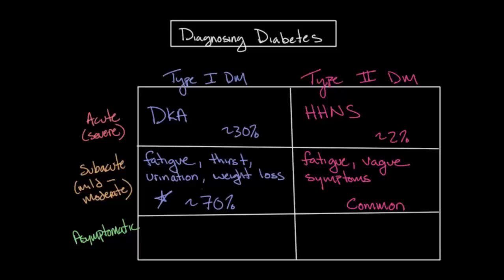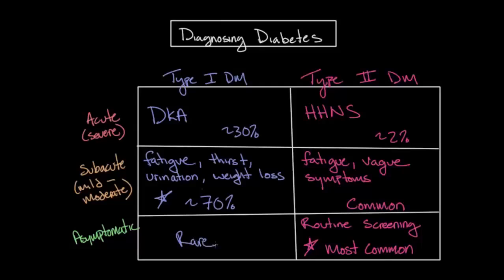The last way individuals with diabetes can present is through asymptomatic screening tests. Type 2 diabetes affects nearly 10% of the population, and due to this high prevalence, potentially severe complications, and the relative ease of treatment, most adults — especially those with risk factors for type 2 diabetes — should be routinely screened for the disease. This is the most common means by which type 2 diabetes is diagnosed. However, it's rare for the diagnosis of type 1 diabetes, as routine screening for type 1 is not usually performed.